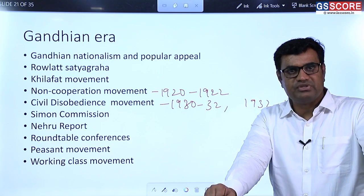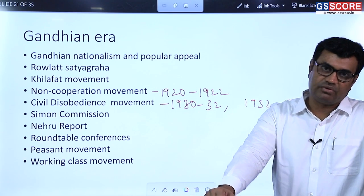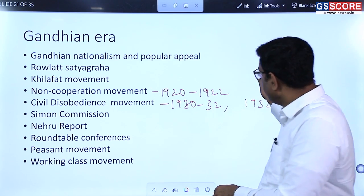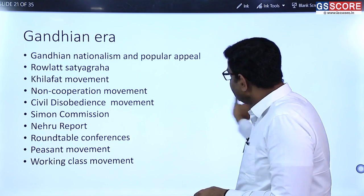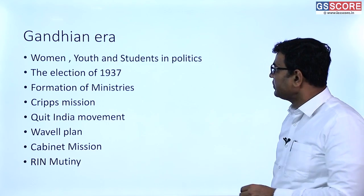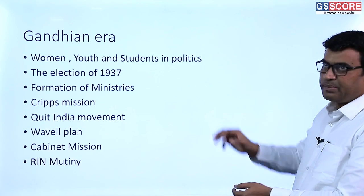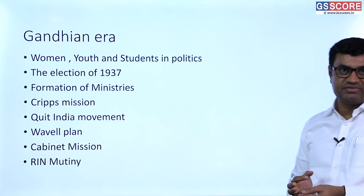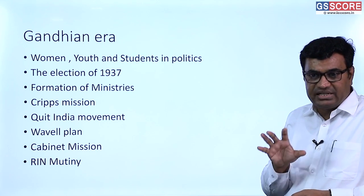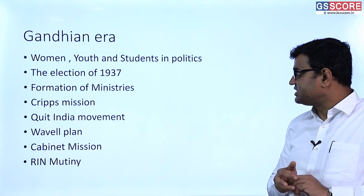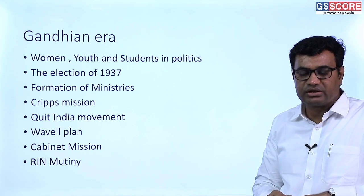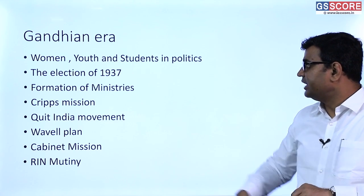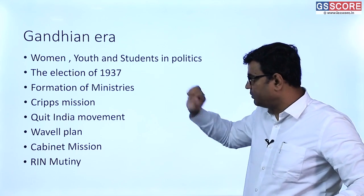Peasant movements continued in United Provinces and Bihar. During the Gandhi era, women, youth, and students participated actively in Indian politics. Provincial elections of 1937 were held in all 11 British-ruled provinces, with Congress forming ministries in nine provinces and introducing several progressive reforms.